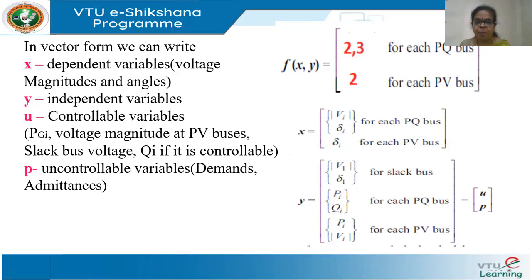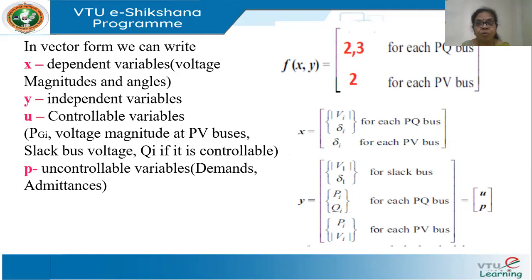Controllable variables U include things you can control: PGi (generation), voltage magnitude at PV buses via excitation, slack bus voltage, and reactive power support Q. Uncontrollable variables P include demand — the customer's choice, which I cannot control. So the independent variables y are divided into controllable U and uncontrollable P sub-vectors.